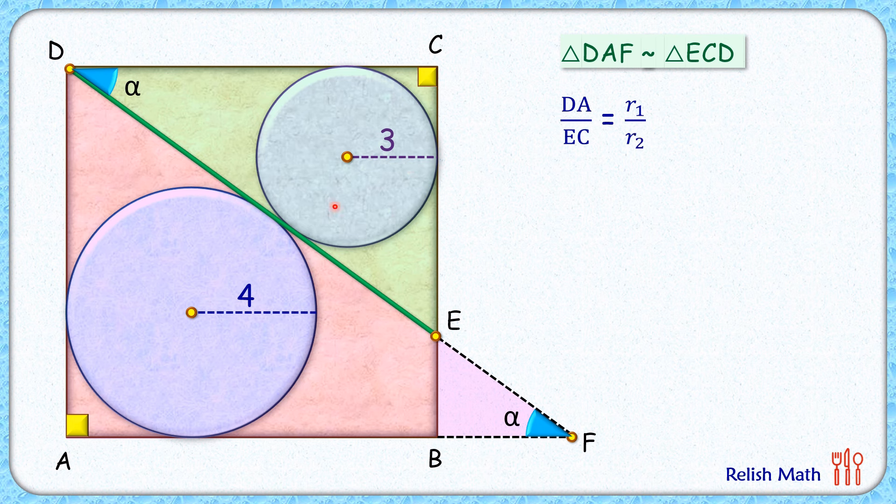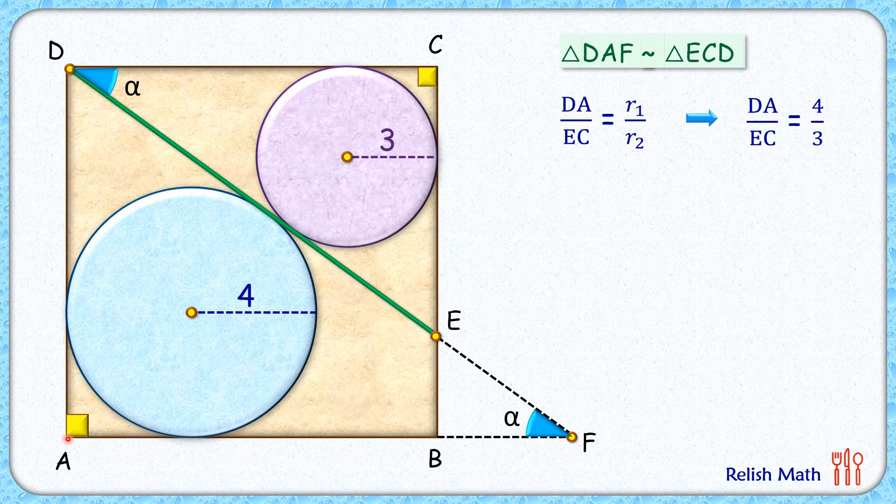Now this in-radius they are given as 4 and 3 cm. So we can say here DA upon EC is 4 upon 3. So if DA length, that's the side of the square, is 4x, then by this ratio we can say that EC length will be 3x.